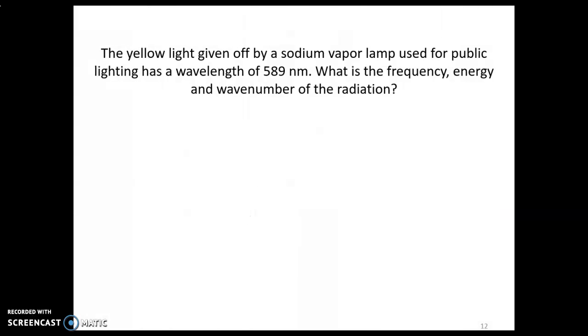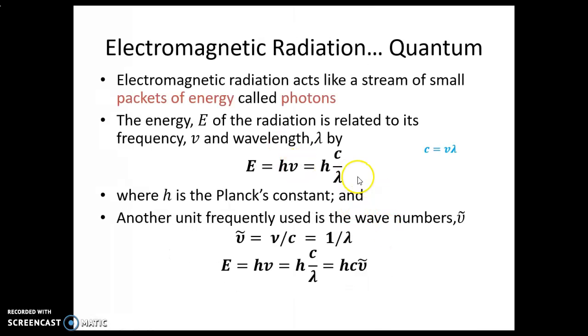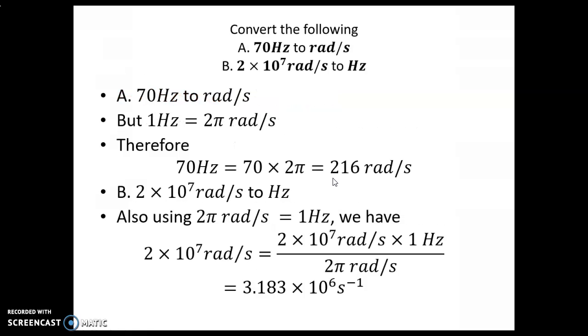Another example given here. The yellow light given off by a sodium vapor lamp used in public lighting has a wavelength of 589 nm. What is the frequency, energy and wave number of the radiation? Of all forms of light that we see around, they are emitted at certain frequency. Even electricity are passed on at certain frequency. So the question is to calculate the frequency, given the wavelength, energy, and wave number of that radiation. We had several equations before that related all this together. So we can easily calculate that.